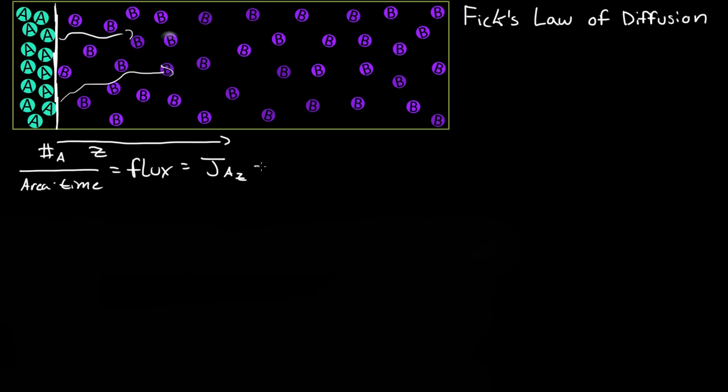And he actually was able to make an equation for it, where it was the negative diffusion coefficient of AB, so this is A and that's B, times change in concentration of A per change in the Z direction.